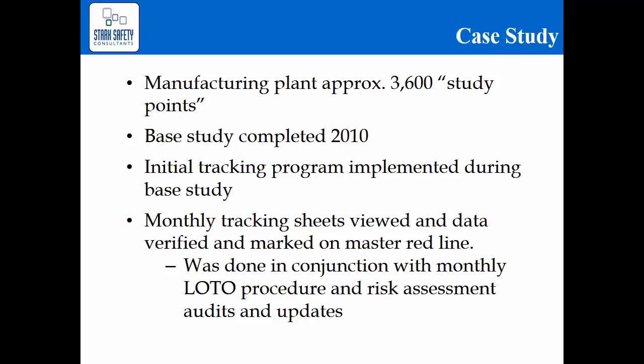Now we want to look at a case study from a facility where we performed an arc flash analysis back in 2010. It was a manufacturing plant that had approximately 3,600 study points — pieces of equipment where evaluation needed to be done from an arc flash study perspective. This was an ongoing facility evaluation where right from the beginning we had a tracking program in place that was started during the base study. It was a periodic tracking as well as updating of the one-line. Looking at since 2010 — this is 2015 now — we're actually on arc flash study revision 7.